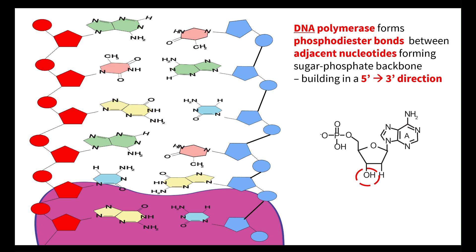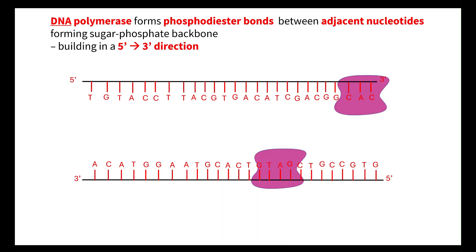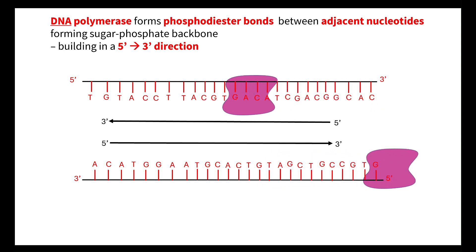Hence why its name is DNA polymerase. We understand that DNA polymerase can only build in a 5' to 3' direction. Because our DNA strands are anti-parallel, that therefore means that the DNA polymerase will actually move in opposite directions.